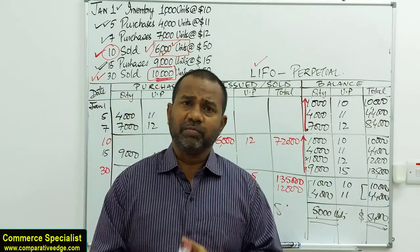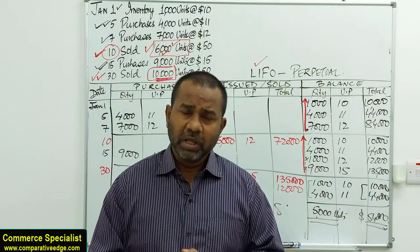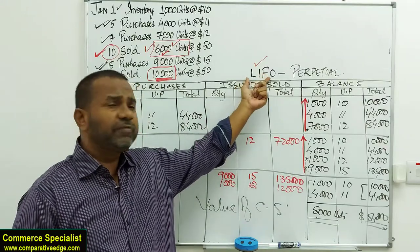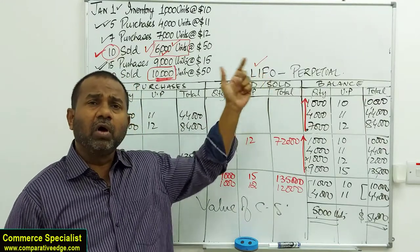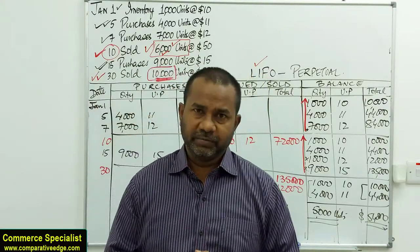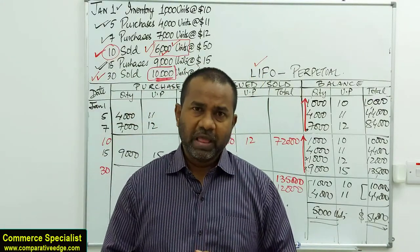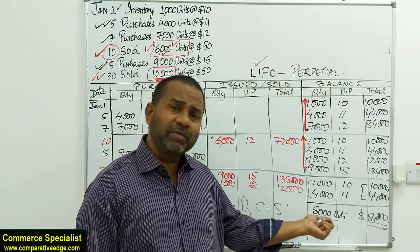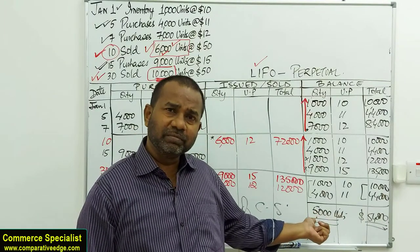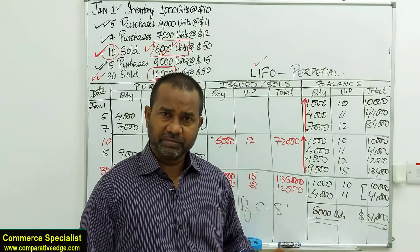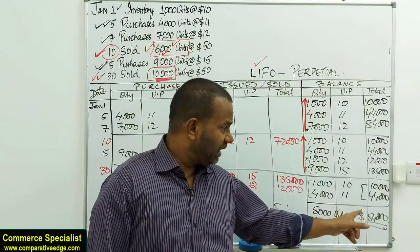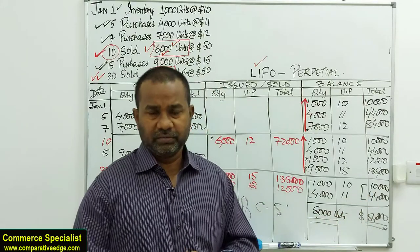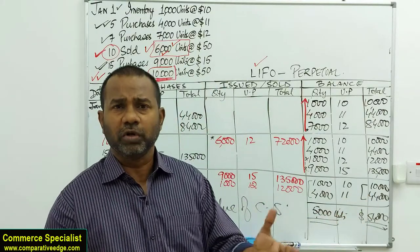An important point: whether FIFO or LIFO, the number of units left at the end is the same — 5,000 units. But the dollar value is different: $75,000 under FIFO versus $54,000 under LIFO. That's the key difference between the methods.